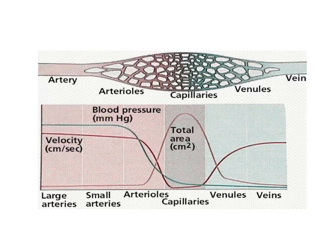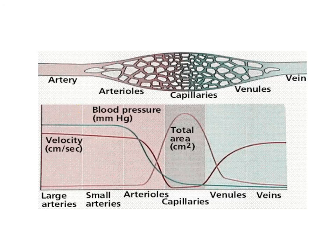A graph compares the velocity of blood, blood pressure, and total cross-sectional area of the arteries, veins, and capillaries. There are a number of questions that can be asked about this diagram, so it is important that students understand it. Looking at the first graph charted in the diagram, one can see that blood pressure is highest in the arteries and drops off as blood moves to the arterioles, to the capillaries, to the venules, and finally the veins. This graph clearly shows that blood pressure drops as blood moves further from the outgoing pump of the heart.